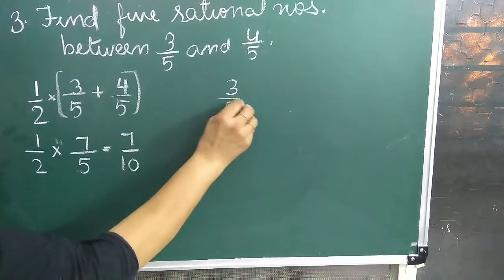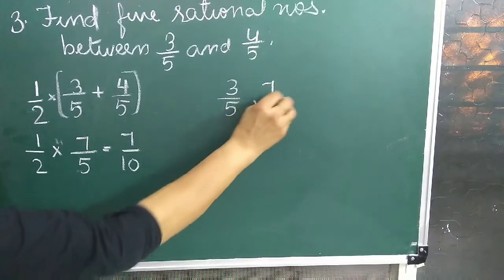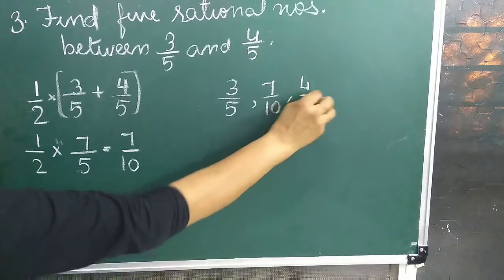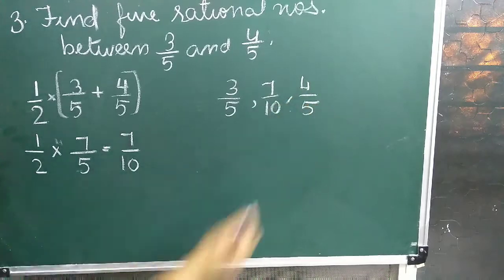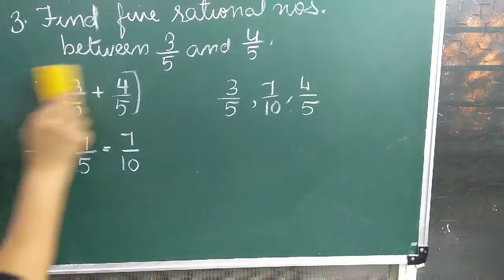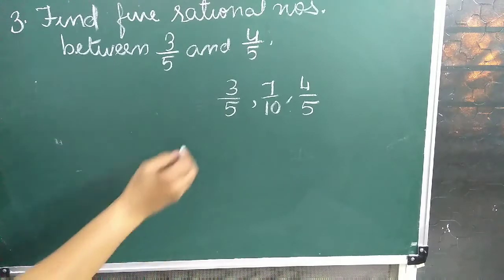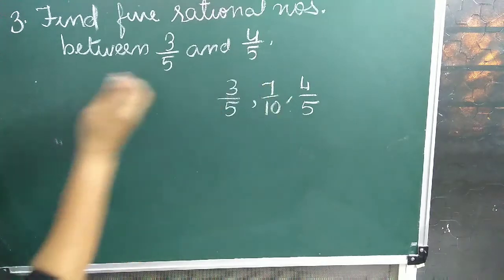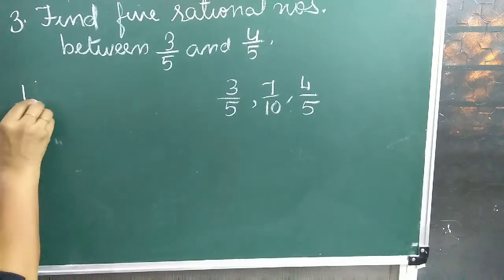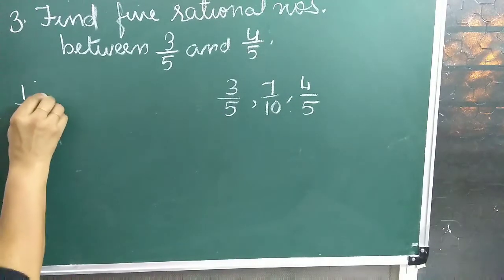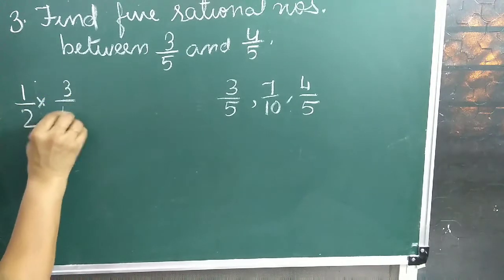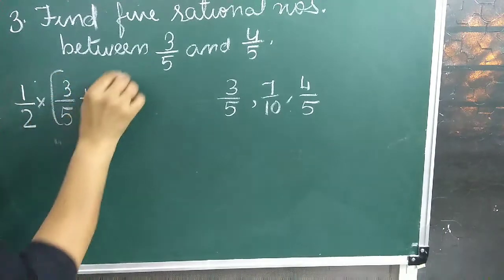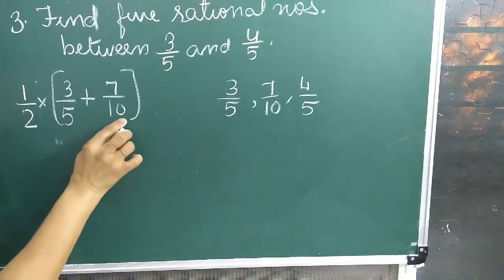So we can write: 3 upon 5, then 7 upon 10, then 4 upon 5. Now we consider the two numbers 3 upon 5 and 7 upon 10, and find their mean: 1 upon 2 into (3 upon 5 plus 7 upon 10). The denominators are different, so we use the LCM method.